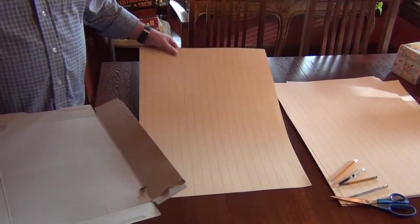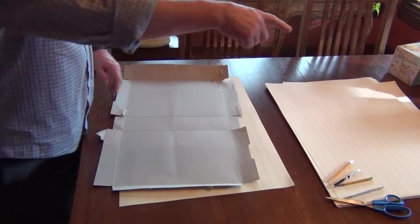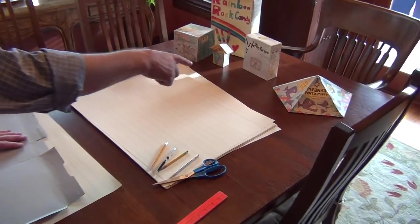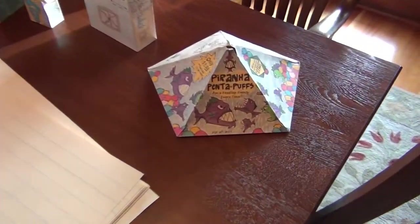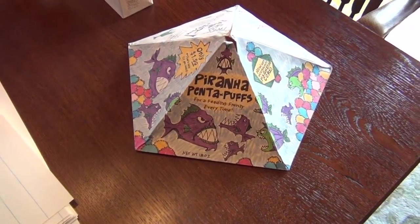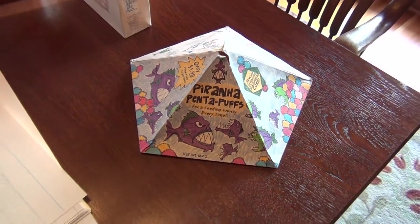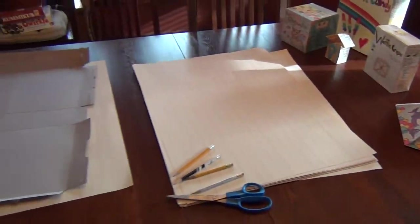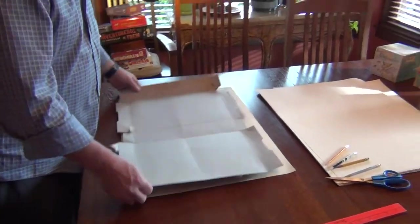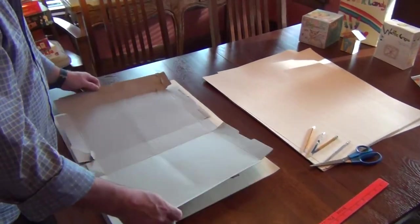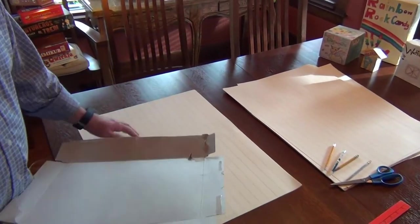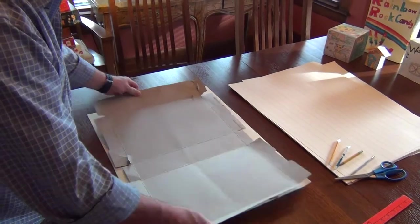These are the pieces of paper you're going to get. It's got lines on it, but if you notice, if you look over here at my Piranha Penta Puffs, you can see that I made this out of this paper. But once I colored it, those lines kind of disappear. So I can almost make this box out of this piece of paper.